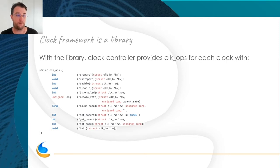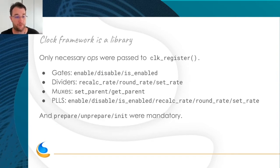With the library, you need to provide some clock ops. It's the base of the clock control drivers. For each clock of your system, you will provide some, not all of them, some of the callbacks. For example, prepare, unprepare. For example, enable, disable. But not all clocks can handle all the functions. For example, only gates can enable, disable. For dividers, you will need recalc rate, round rate, set rate. For muxes, set parent, get parent. For PLL, you need almost everything. You can have fixed clocks with only one callback, get rate, for example.